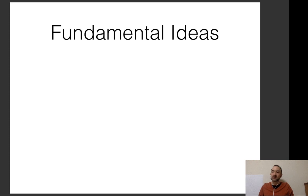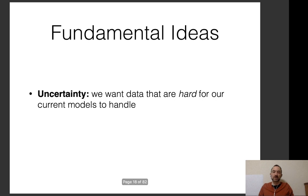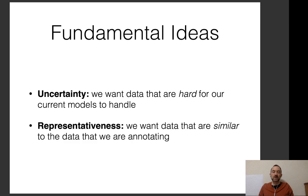In doing active learning methods, there are two fundamental ideas. The first is uncertainty: we want data that are hard for our current models to handle, because if we can handle harder examples, we can probably handle easier ones too, and we want to improve our models by picking examples they're less likely to get correct. The second is representativeness: we want data that are similar to other data in our set, so that labeling them improves accuracy on other examples in the dataset.